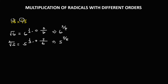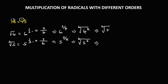To write this in radical form, we have the 6th root of 6 to the power 3, and the other one is the 6th root of 5 to the power 2.